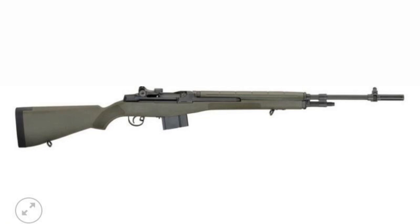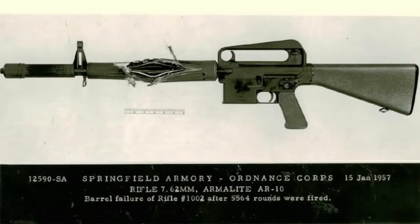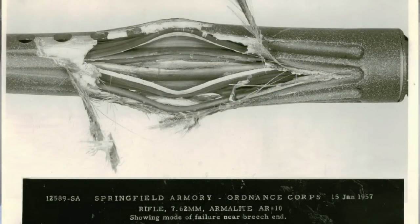This new era introduced the active use of aluminum, plastics, carbon, and fiberglass in various parts of rifles, including the stocks and notably the barrels. Unfortunately, under pressure from competitive tenders and management, engineers were pushed to make compromises. They over-lightened and thinned the main barrel excessively. As a result, during professional tests, such barrels couldn't withstand the pressure and ruptured. This failure was a significant blow to the reputation of the AR-10 rifles, severely undermining trust in both the AR-10 system and carbon barrels in general.